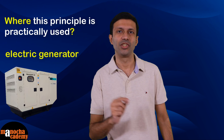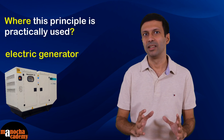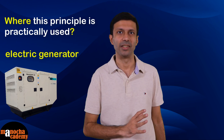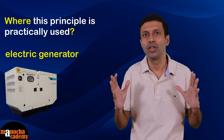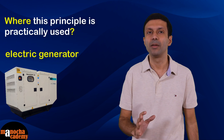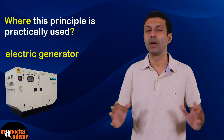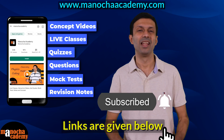I hope the concept of electromagnetic induction is super clear now. This principle is practically used in an electric generator, where there is relative motion between the coil and the magnet, inducing a current in the coil — and that's how electricity is produced. That's how we get electricity in our homes and offices, generated at a power station far away from the city. To revise the concepts, visit manachacademy.com — links are in the description below. Thanks for watching!